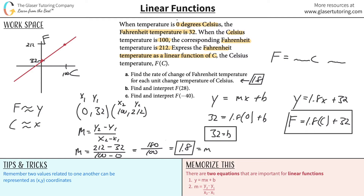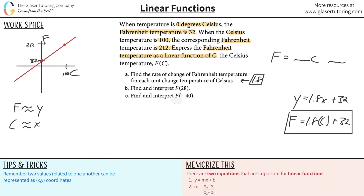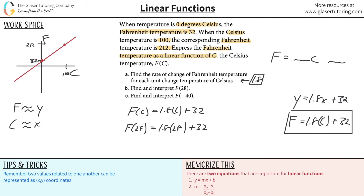Now F of C equals 1.8 times C plus 32. It says find and interpret F of 28. The 28 is the Celsius temperature, so plug 28 in for C: F of 28 equals 1.8 times 28 plus 32. That gives us 82.4 degrees Fahrenheit. So F of 28 is 82.4 — that is the answer for letter B.